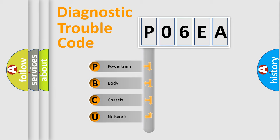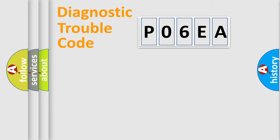We divide the electric system of automobile into four basic units: Powertrain, Body, Chassis, and Network. This distribution is defined in the first character code.